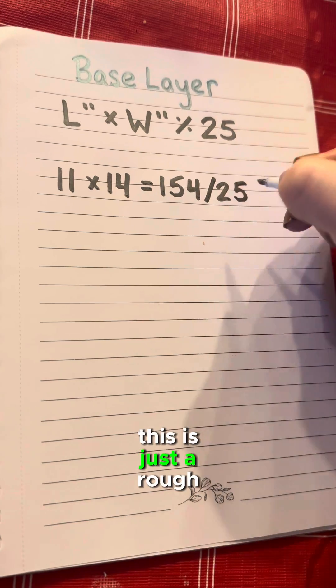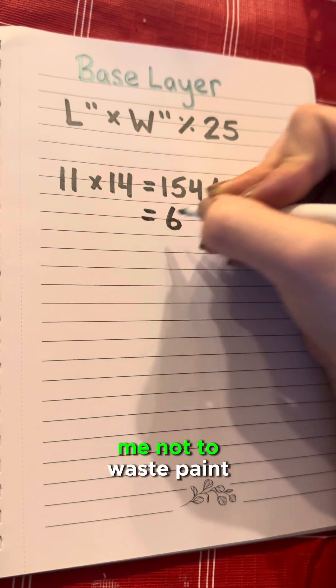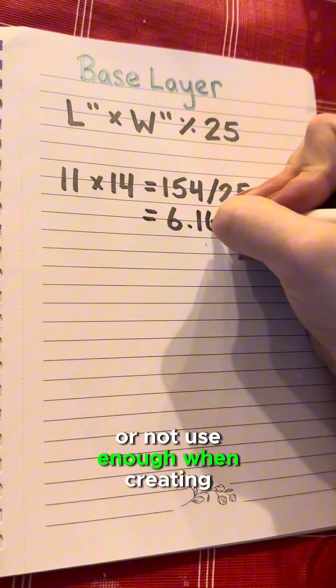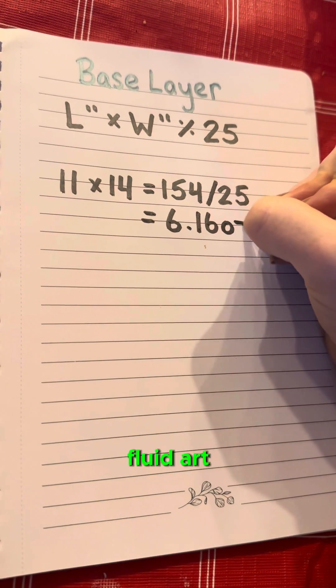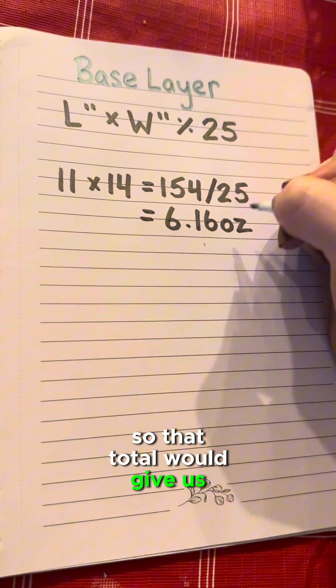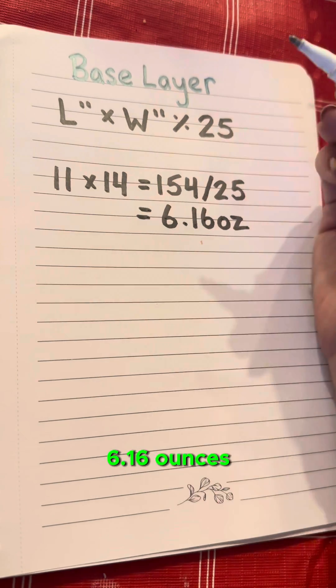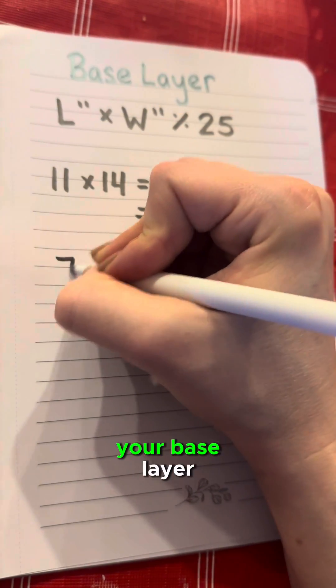This is just a rough calculation. This equation has helped me not to waste paint or not use enough when creating fluid art. So that total would give us 6.16 ounces to cover an 11 by 14 canvas for your base layer.